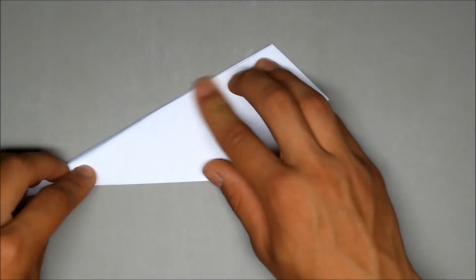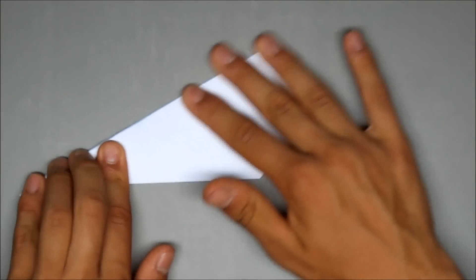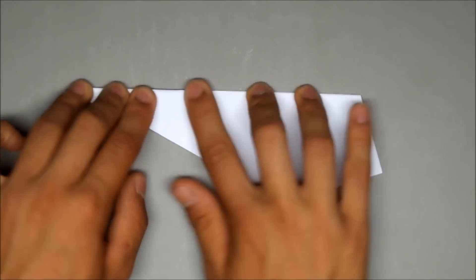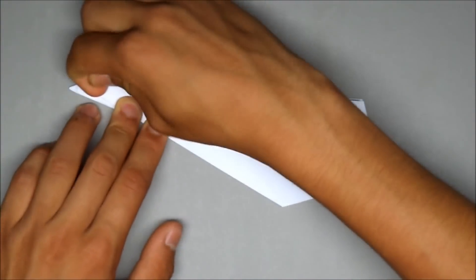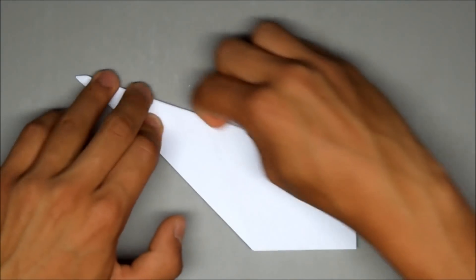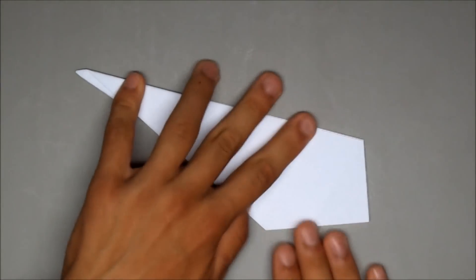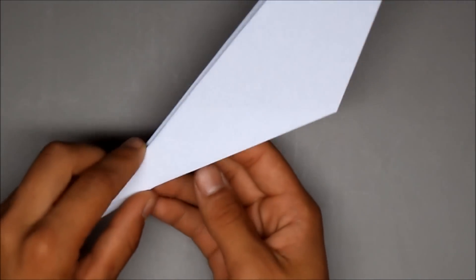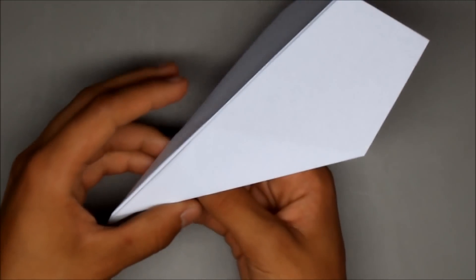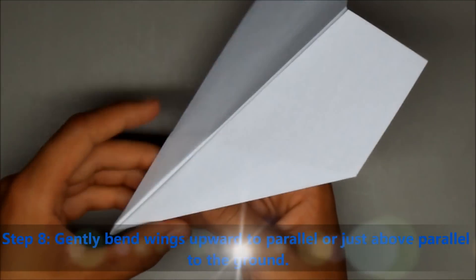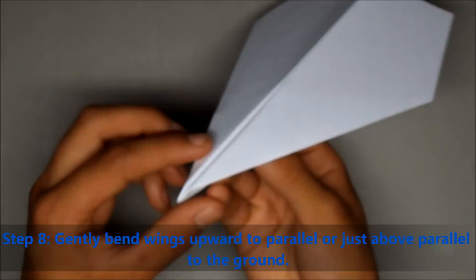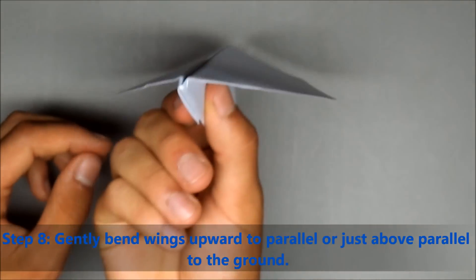But right here you essentially have your plane. So make sure that all the bubbles are out. Press it down good. Make sure your creases are sharp. Make sure the wings are relatively the same size. And then lift the wings very gently. Okay, so now your plane should look like this.